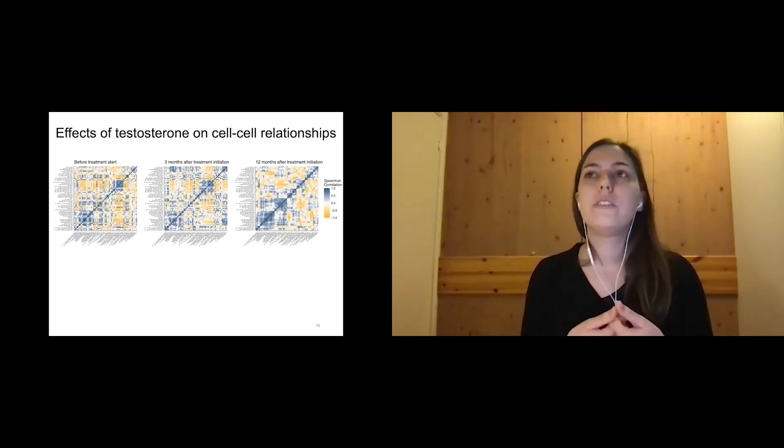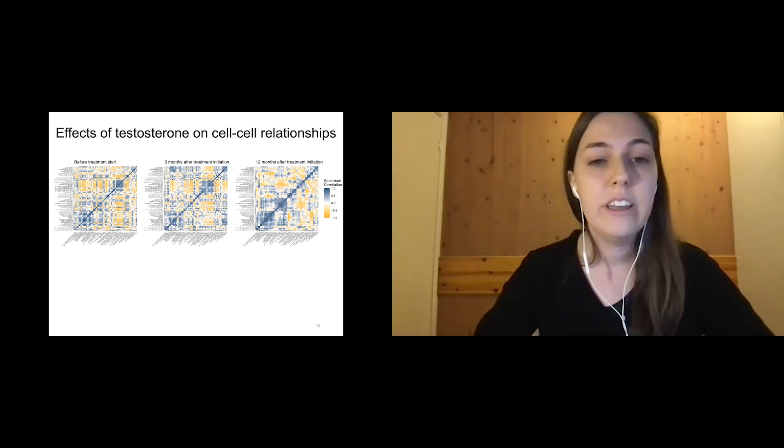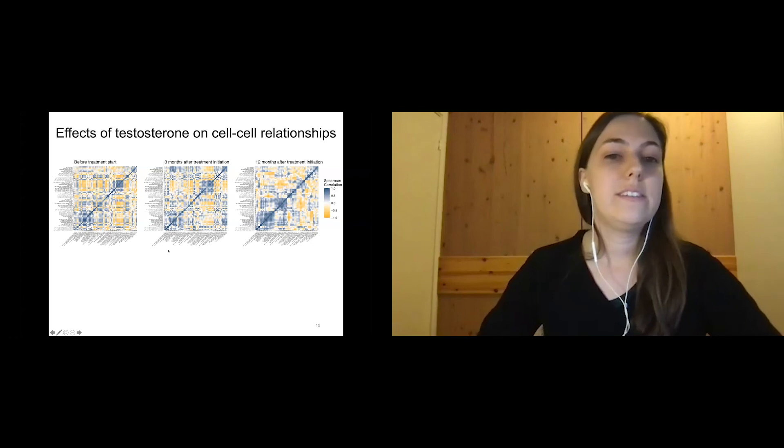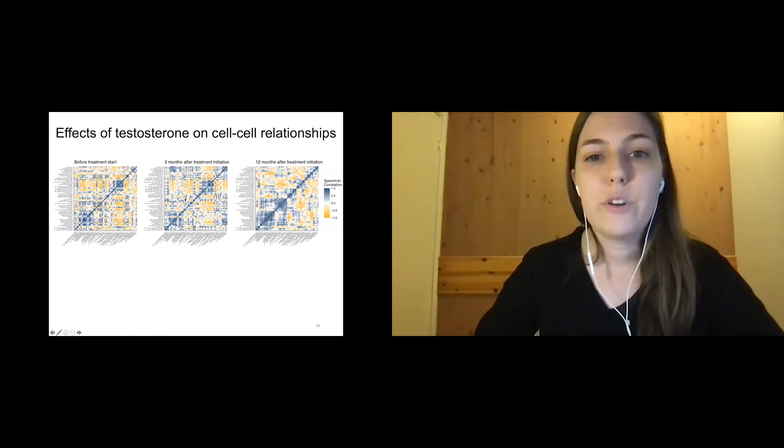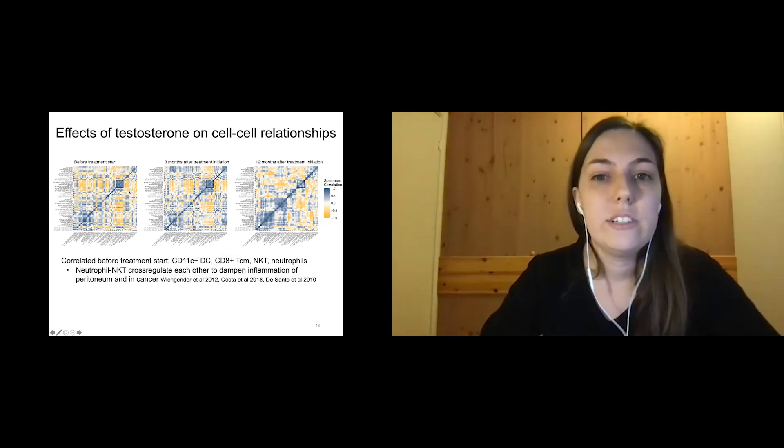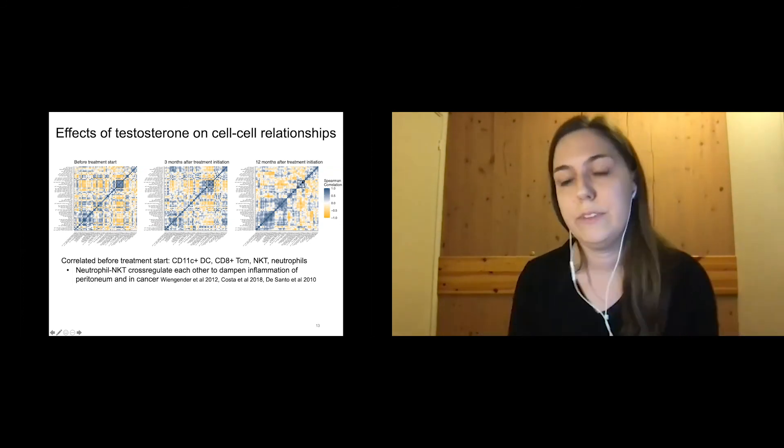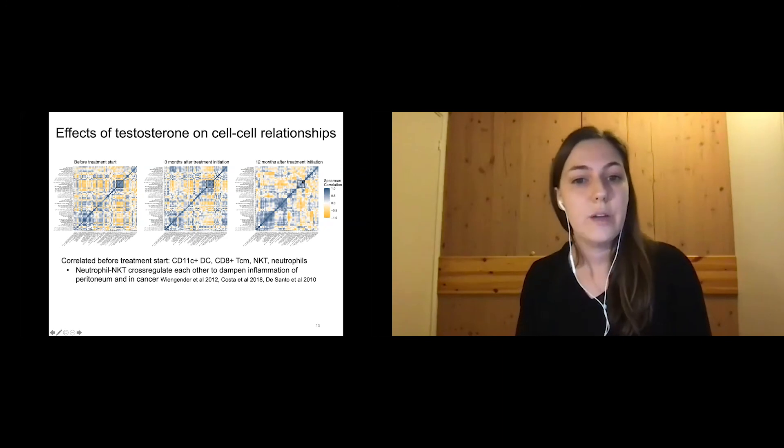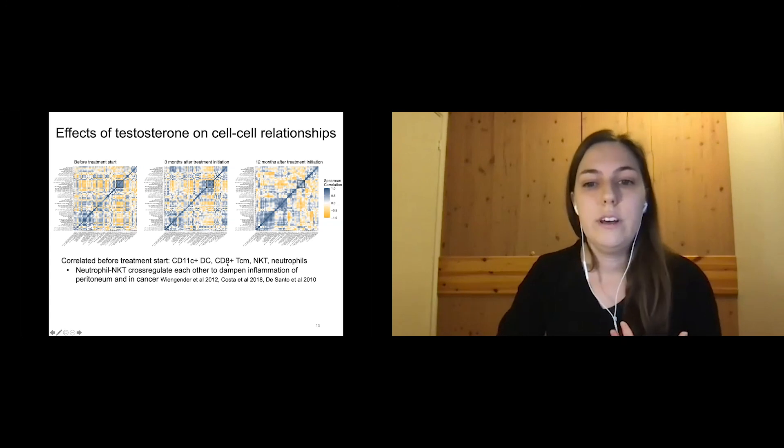Another question we had was whether cell-cell relationships were changing over the course of testosterone treatment. What I want to show you here are correlation maps. You're seeing all these different cell populations that we're looking into before the start of treatment, after three months and 12 months of testosterone treatment. What we can really see here is that there are some populations that are highly correlated in the beginning before testosterone treatment where this correlation is lost over time.